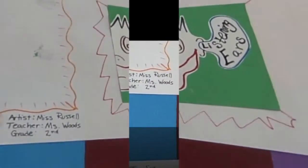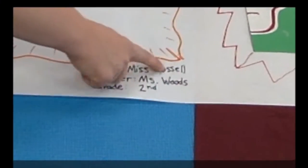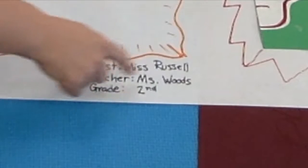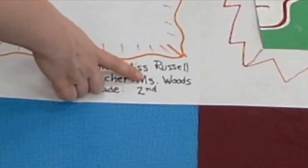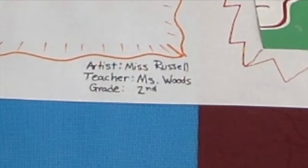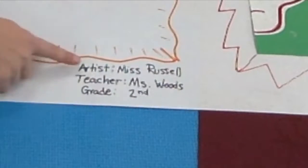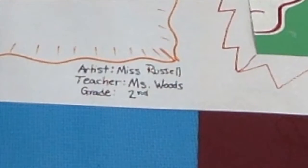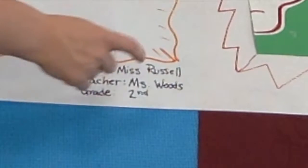When you're all done with your frame, you are going to add artist, your name, teacher, your teacher's name like your classroom teacher, and grade, the grade you're in. I know people say, well Miss Russ, we all know that Mrs. Woods teaches second grade, but adults don't know that, so we're going to include those three things. That's going to be written in marker as well, right below your frame in the bottom right hand corner.